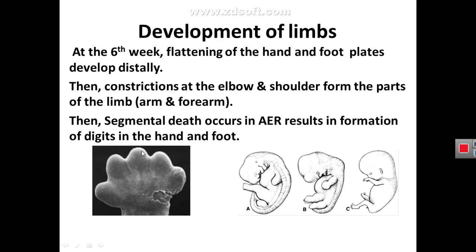The apex of the limb bud shows an apical ectodermal ridge, which secretes substances that promote or induce elongation and growth of the limb bud. If this ridge is cut, limb growth stops; if transplanted to another region, a new limb bud forms there. Segmental cell death occurs in the apical ectodermal ridge, resulting in formation of the digits — the fingers and toes.